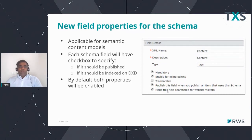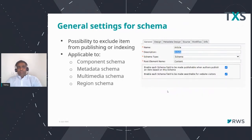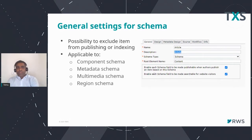By default, both properties will be enabled. Unless you turn them off, they will remain enabled by default. You can also set these as general settings while creating the schema — so if you want all fields to be enabled for content publishing as well as searchable on your website, you can check them in the general properties. These properties will be available for multiple schema types: component schema, metadata schema, multimedia schema, or region schema.